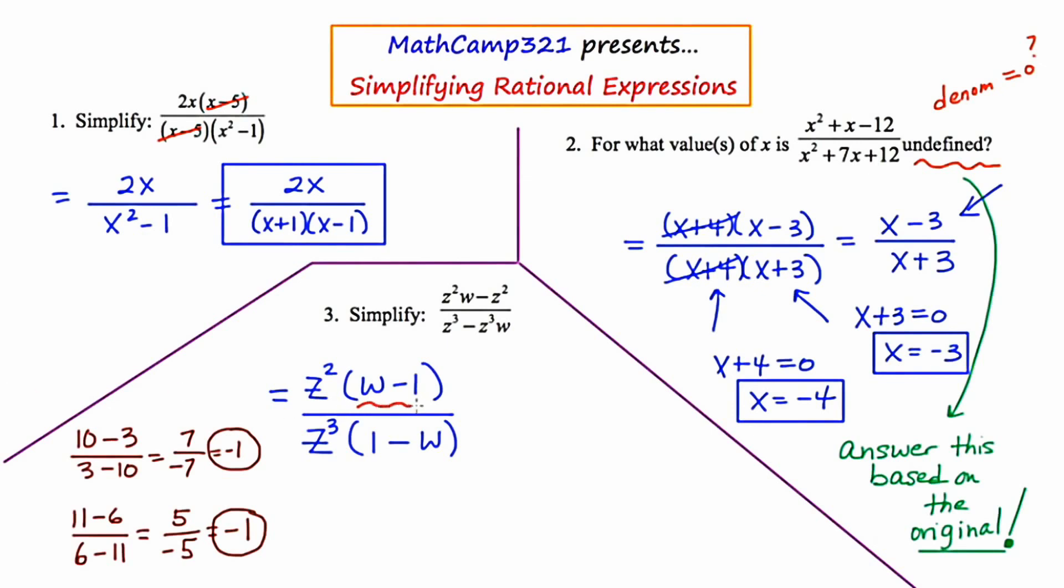We have w minus 1 and 1 minus w. w minus 1 and 1 minus w are two binomials which are exact opposites of each other. And like we saw with the brown examples, these will be able to cancel out, but you're left with negative 1. And I hope I've illustrated that with the brown two different times.